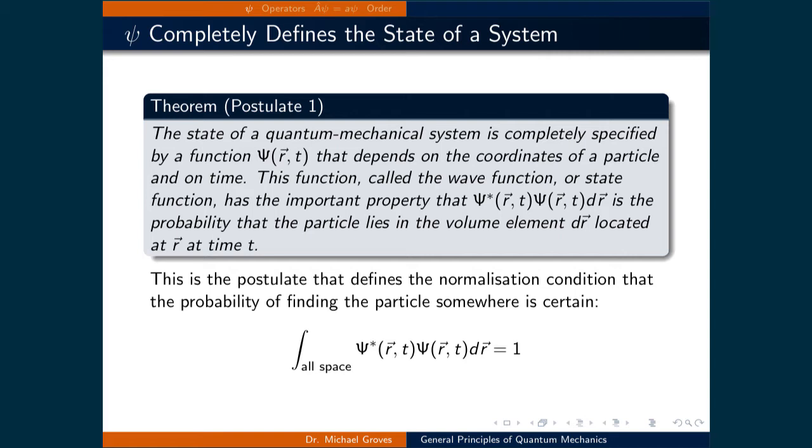It is this postulate that defines the normalization condition that we have already employed, where the probability of finding the particle somewhere is certain. In this course, we will only be examining solutions to the time independent Schrodinger equation. Time dependence only appears here to ensure a precise definition.